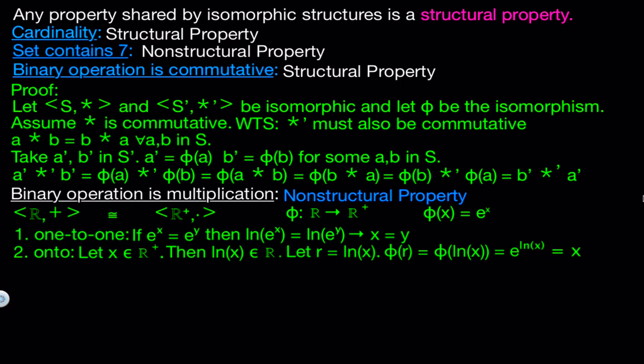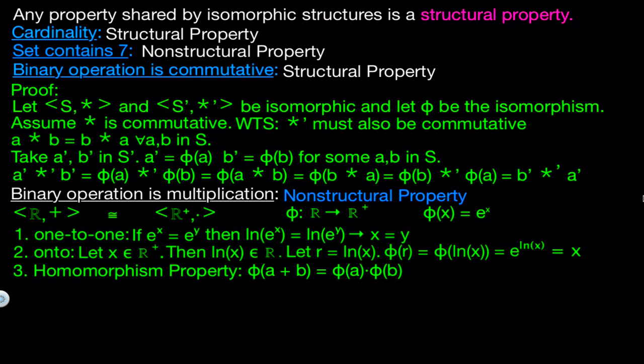Now finally, the last thing we need to show is that the function satisfies the homomorphism property. So if we have phi of a plus b, we need this to equal phi of a times phi of b, for all a and b in the set of positive real numbers. So we get the left-hand side to be e to the a plus b, and the right-hand side, we get e to the a times e to the b. And these are equal, so it does satisfy the homomorphism property.